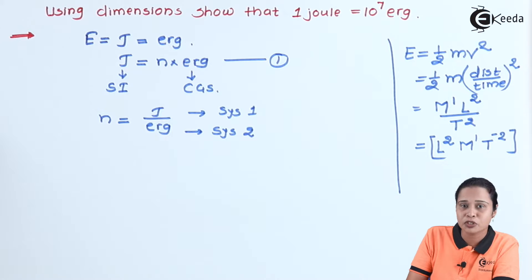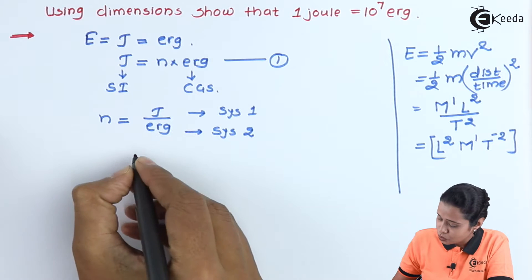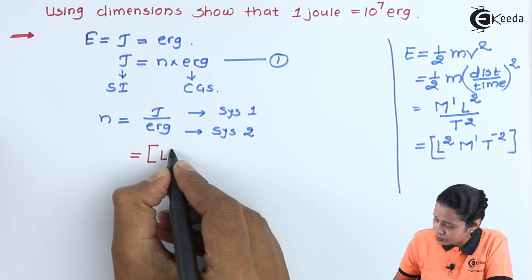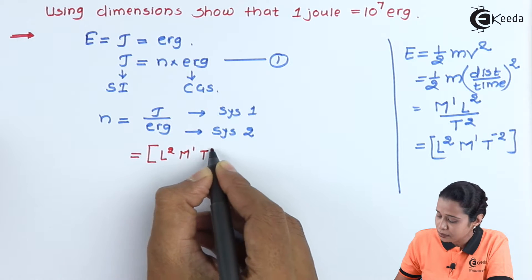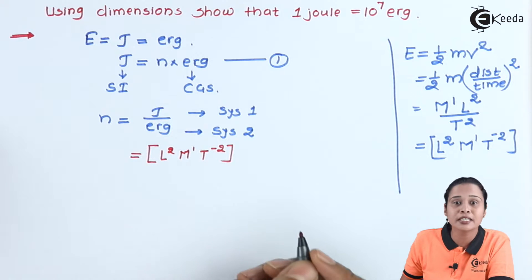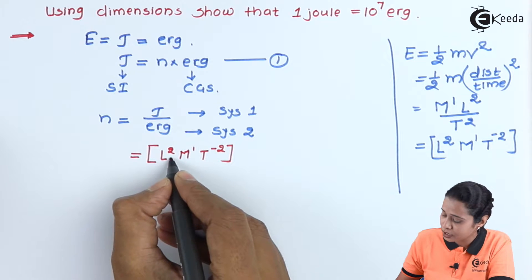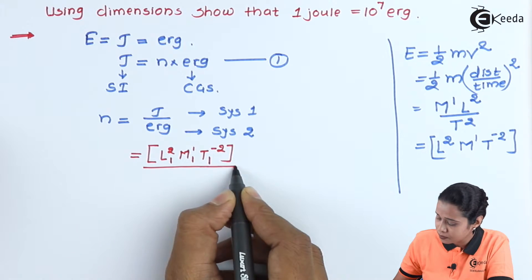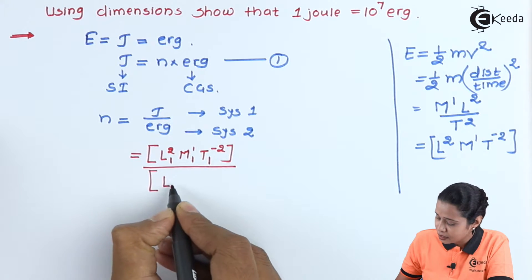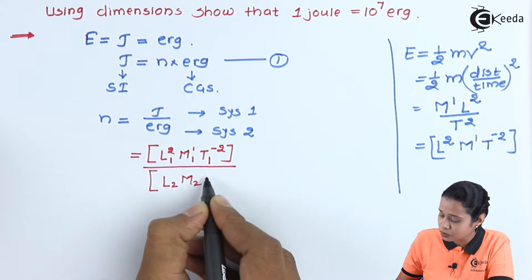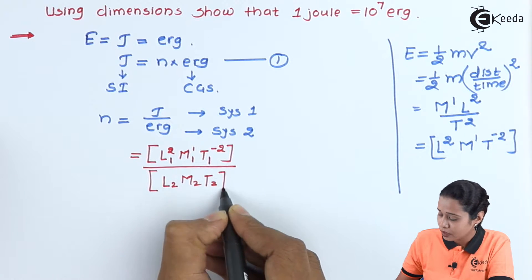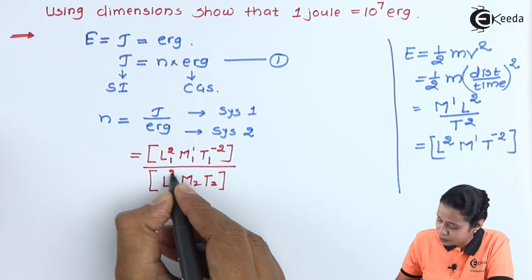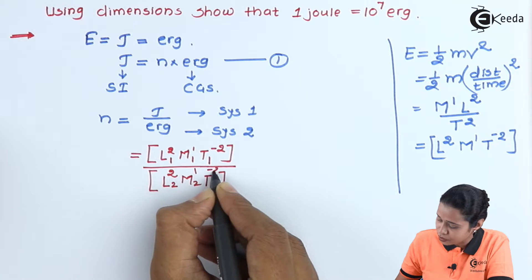Let us write down in terms of the dimensions. The dimension of energy is L²M¹T⁻², but this is in the first system. So we will write down here L1, M1, and T1 upon the second system, that is L2, M2, and T2. As we have the same physical quantity, its powers will be the same — so here the powers will be 2, 1, and minus 2.